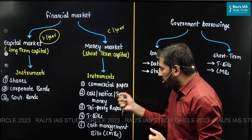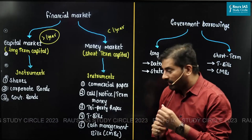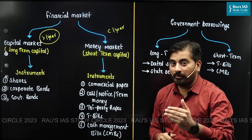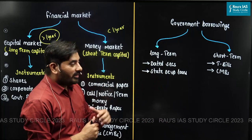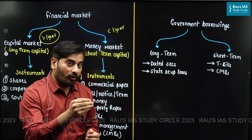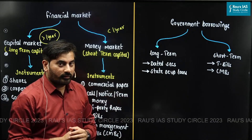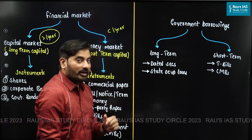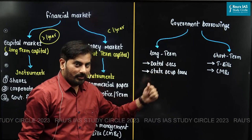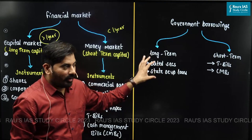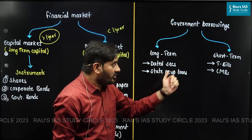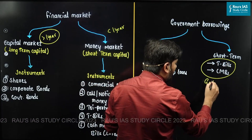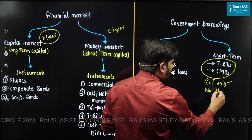Similarly, we have call notice or term money, which is used for interbank borrowing and lending. Then we have tri-party repos, and then treasury bills as well as cash management bills, which are issued by the Government of India. Whenever the government wants to borrow money, it may borrow both long-term or short-term loans. To raise long-term loans, the Government of India issues what are called dated securities, while state governments issue state development loans — both generally called government bonds. If the government wants to raise short-term capital, it will issue treasury bills as well as cash management bills, and these instruments can only be issued by the Government of India, not by state governments.